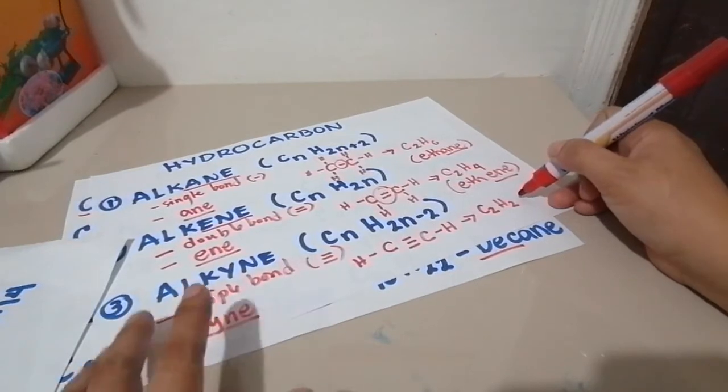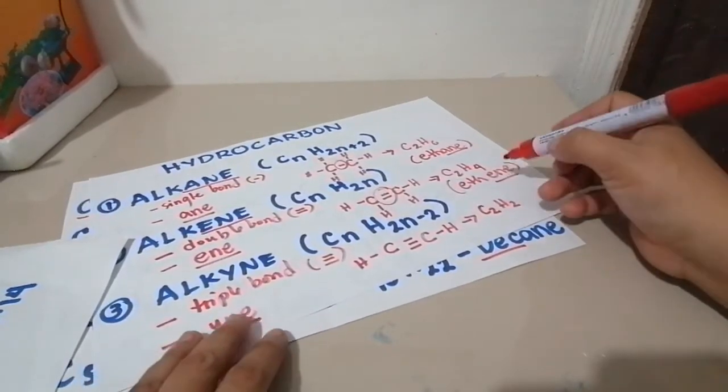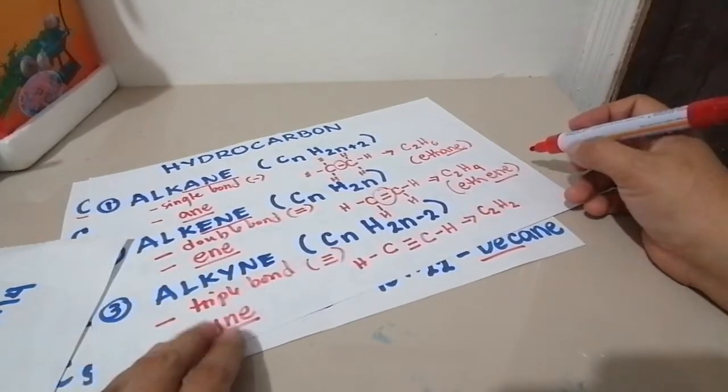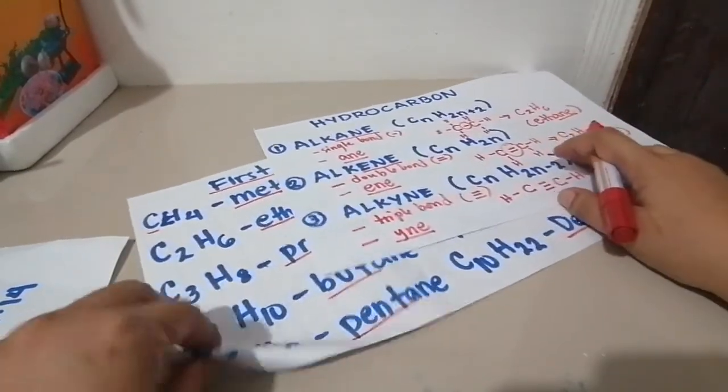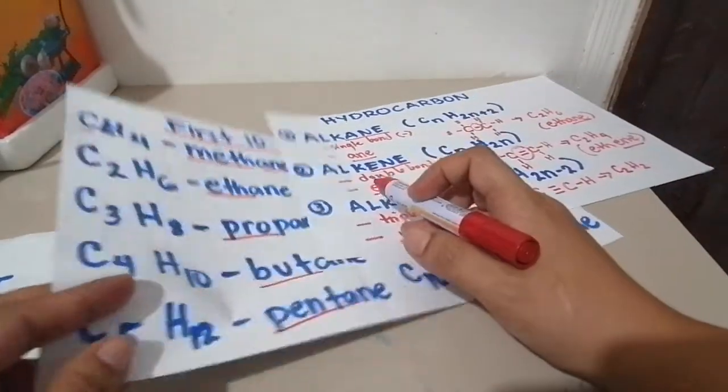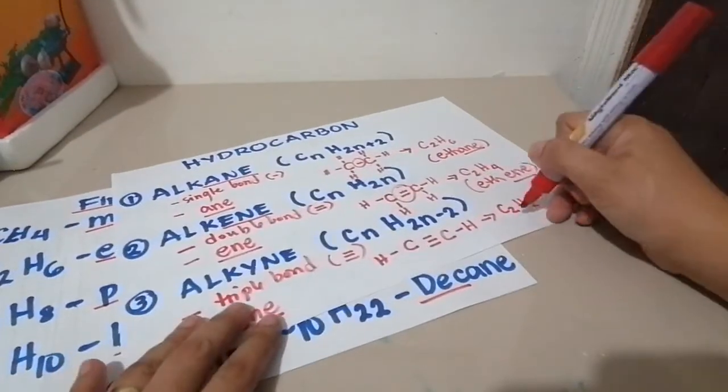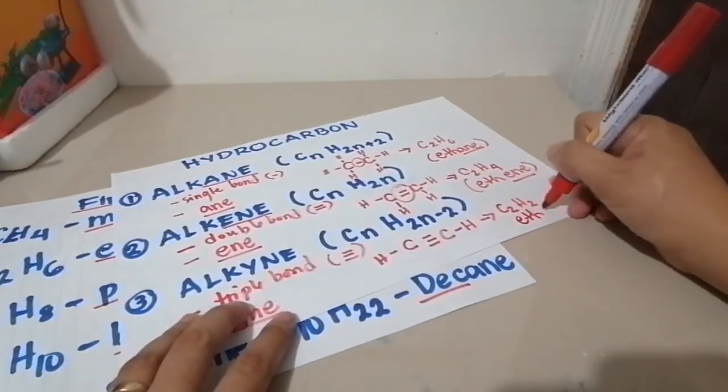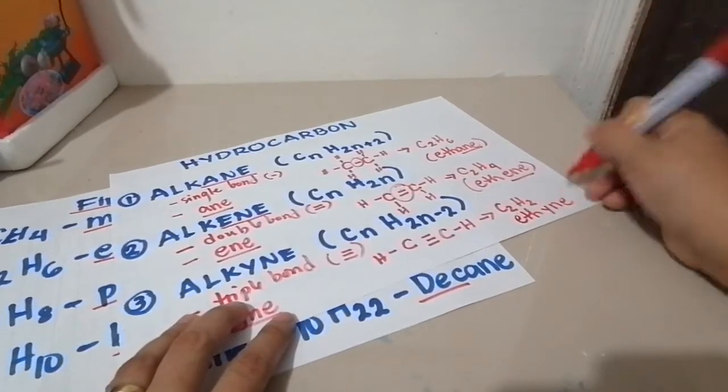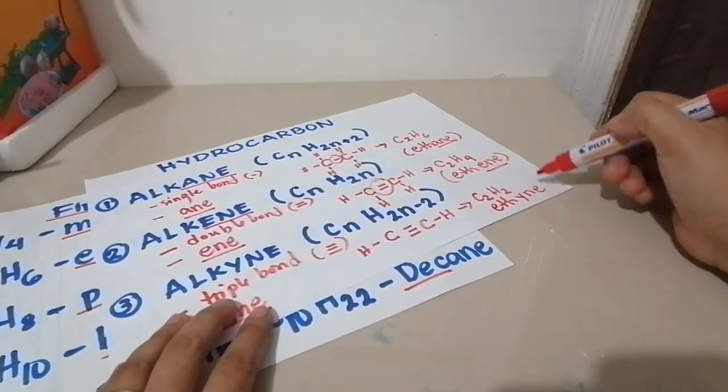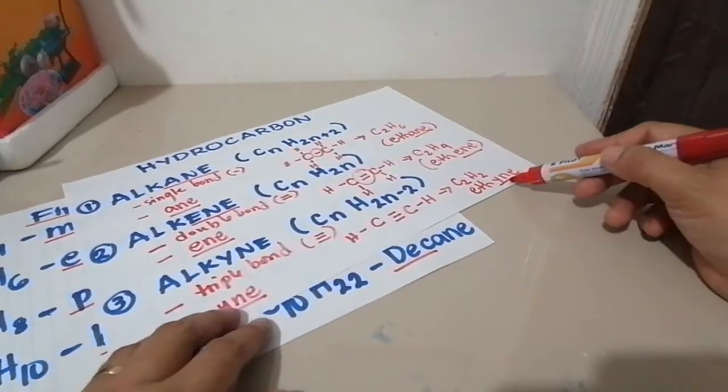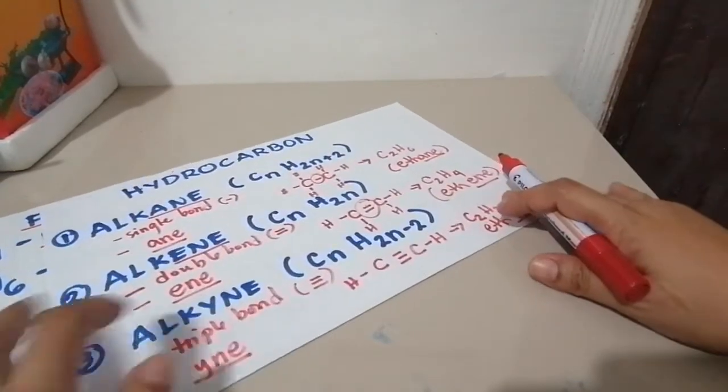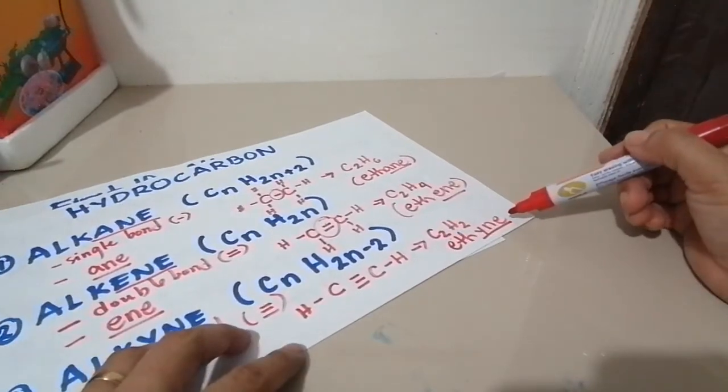And it has this formula, it satisfies this formula, the CnH2n-2, then therefore, this is an alkyne. And if we name this alkyne, since it has 2 carbons, and we said that when the carbon is 2, it has the prefix eth, we will name this as ethyne. So ethyne has suffix -yne at the last.